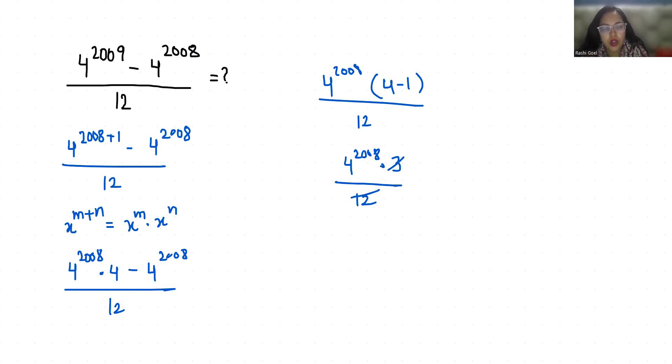So 4 power 2008 by 4 power 1. According to exponent rule, x power m by x power n we can write x power m minus n. So 4 power 2008 minus 1, that is 4 power 2007. I hope